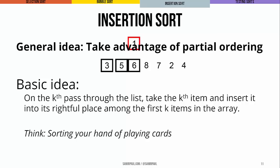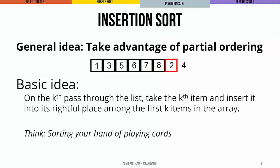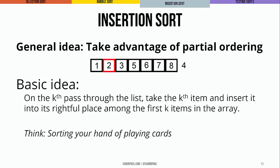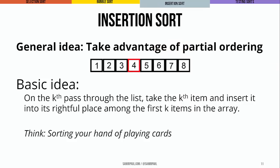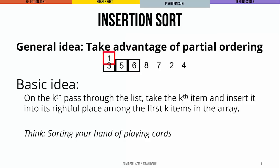Insertion sort, our third algorithm and the last one for the day, is an attempt to take advantage of the array's partial ordering if it exists. On the kth pass through an array, we want the kth item — from elements zero to k — to be inserted into the right place among the first k items. You can think of this as the way many people sort a hand of playing cards: you take the last card and stick it at the beginning, then bit by bit take the last card and insert it wherever it needs to go, gradually building a sorted list from the beginning.